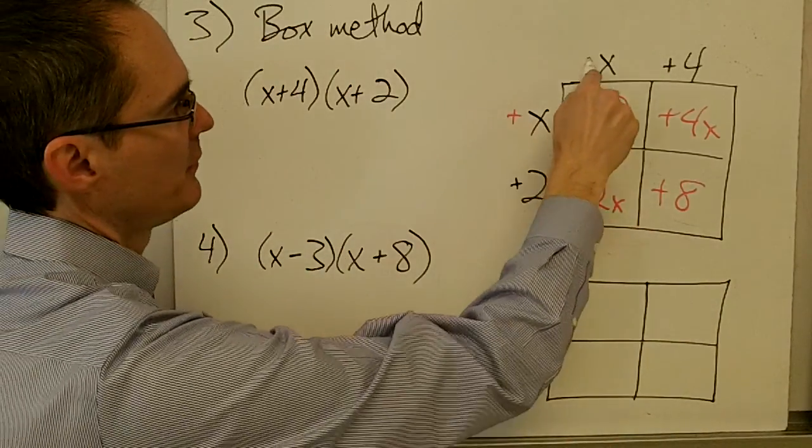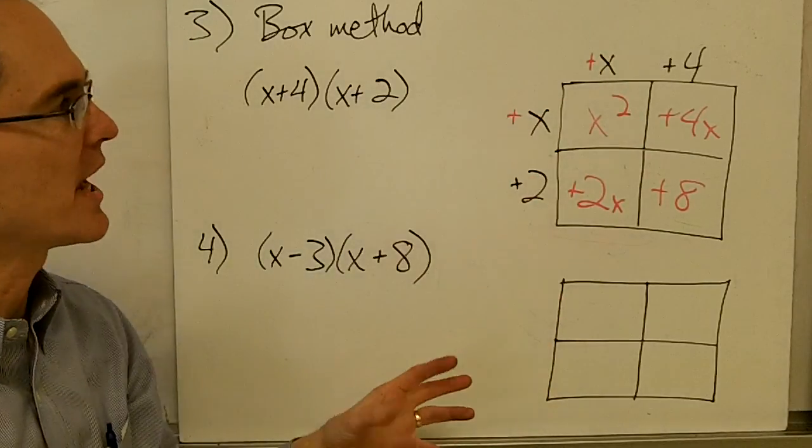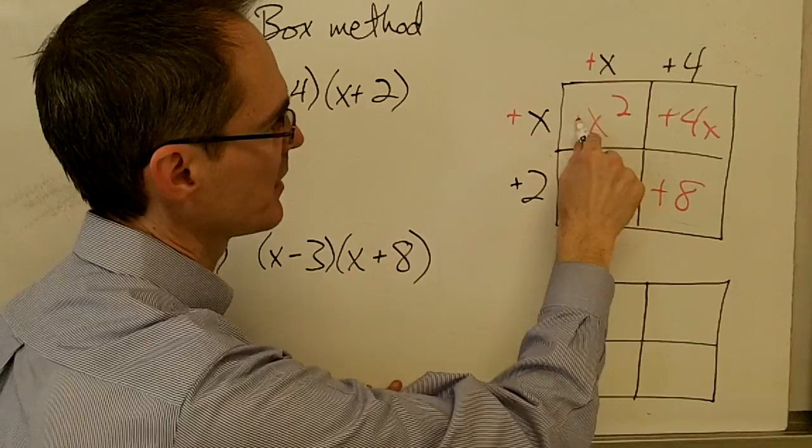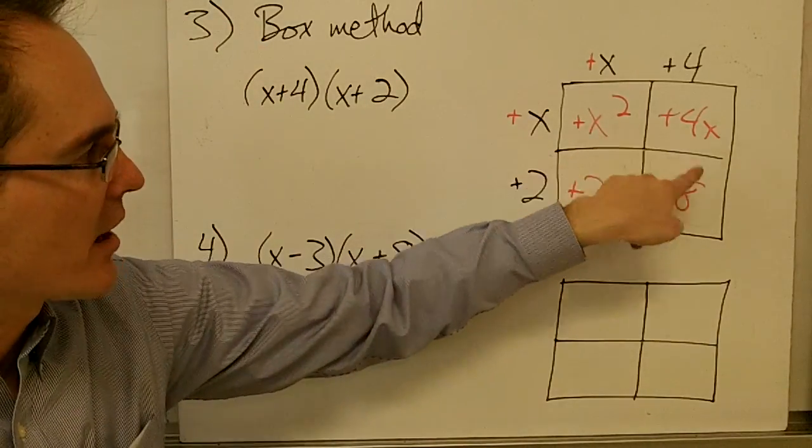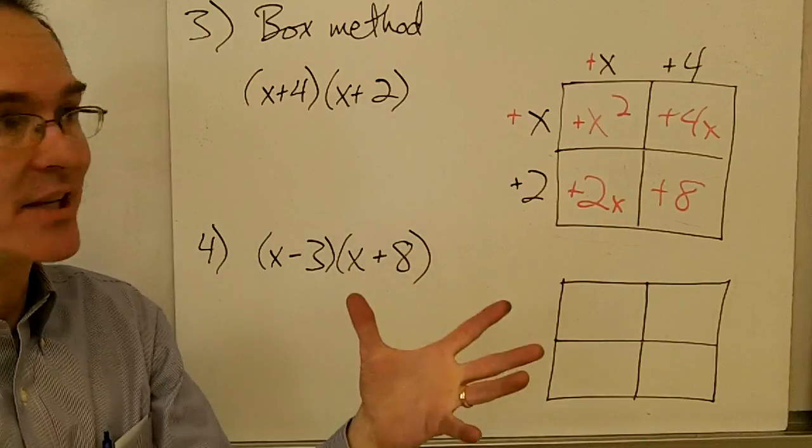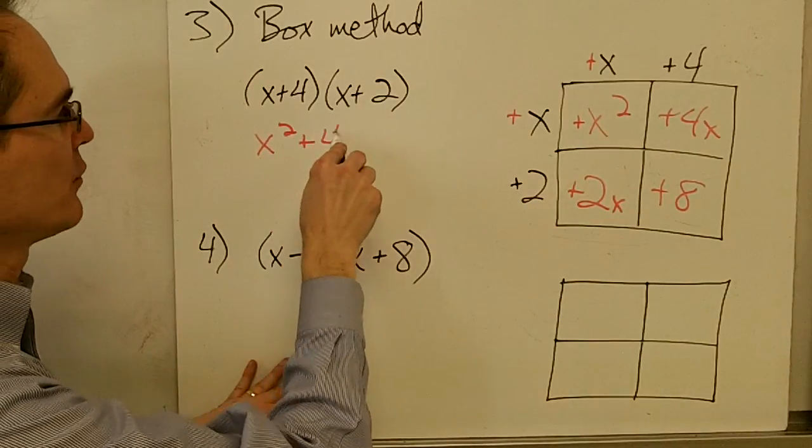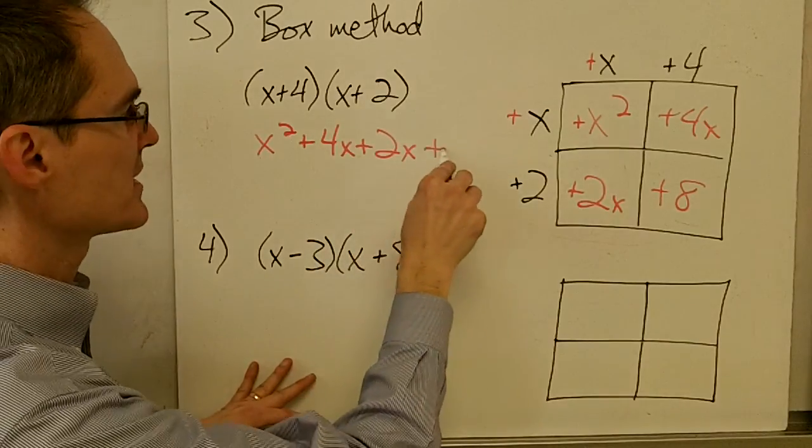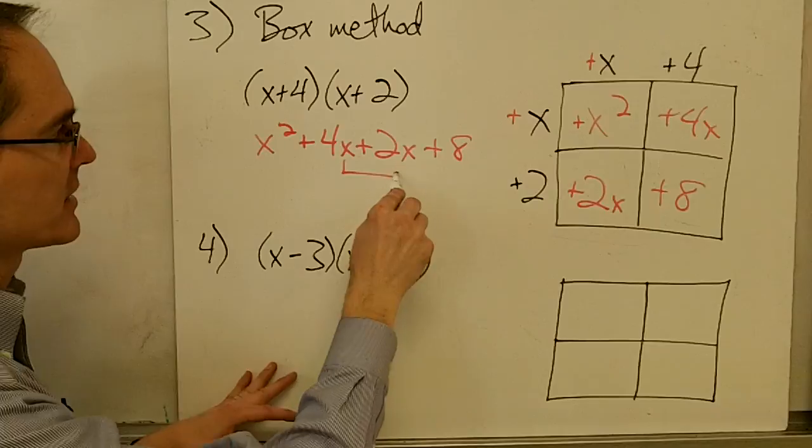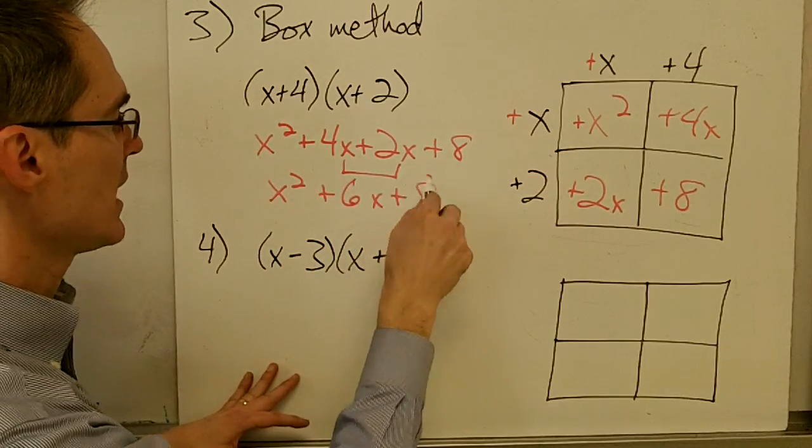Often, it's helpful to write in front of the terms the actual sign of the terms, just to make sure you keep all your signs straight. So positive x times positive x is going to be positive x squared. And now, I've got all of my terms here, and I just want to write them all down. So that's going to be x squared plus 4x plus 2x plus 8. And again, I collect up my like terms, and I get x squared plus 6x plus 8.